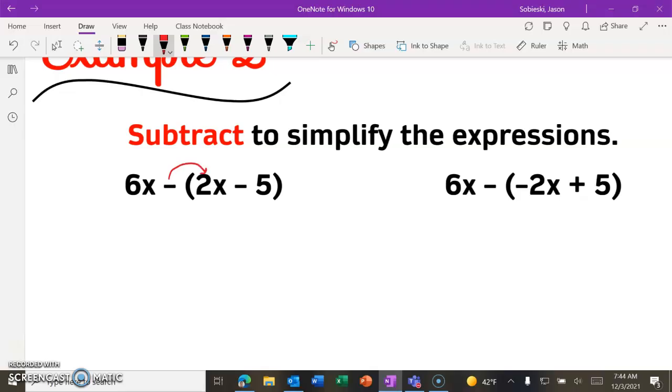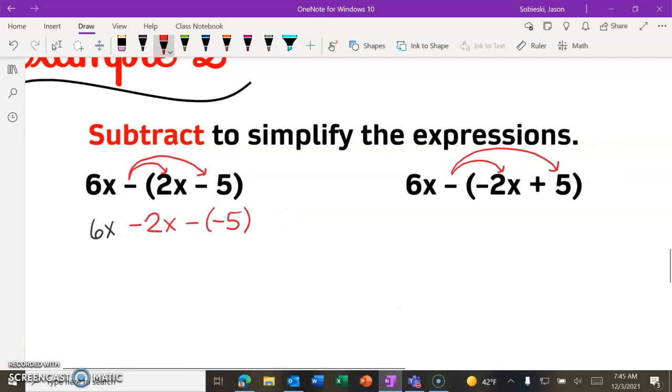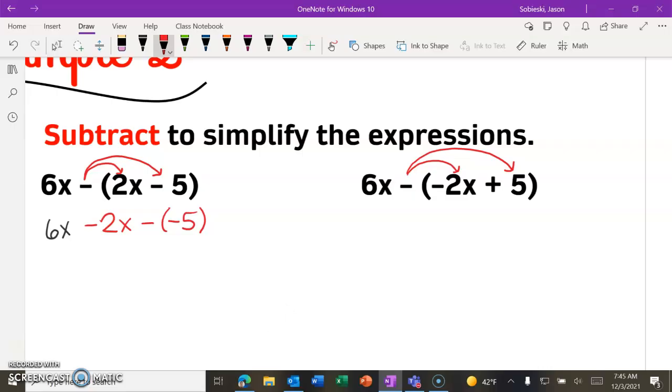So, again, this subtraction problem, subtraction sign, gets distributed or sent to everything inside the parentheses. So that happens in our first example, and then also in this second example over here. So let's see what that looks like. So 6x, we are going to subtract a 2x. And then we are going to subtract a negative 5, actually. Right? Because the first one is the subtraction sign from the middle of the problem. And then this we're going to keep as a negative. And then, of course, you still have the 6x up front. And while we're at it, before we send you off to see if you can finish these, let's just do it for the second example as well. So minus a negative 2x. And then minus just a positive 5.